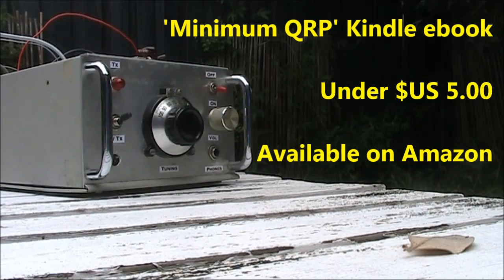If you need more information about QRP equipment and operating, why not check out my book, Minimum QRP. Details of it appear on vk3ye.com, or you can go into Amazon and search under Minimum QRP. It's under $5 US, and almost 1,200 copies have now been sold.